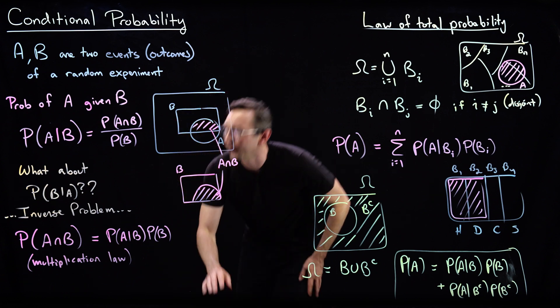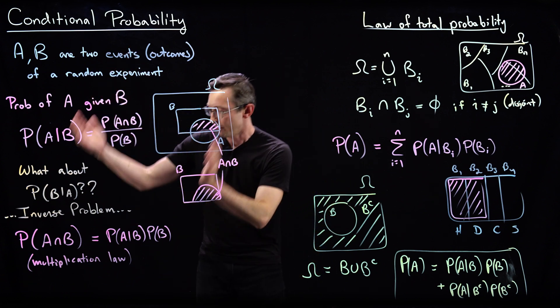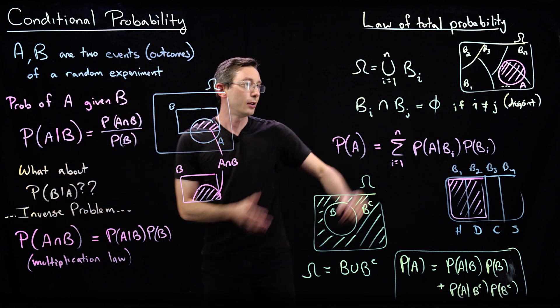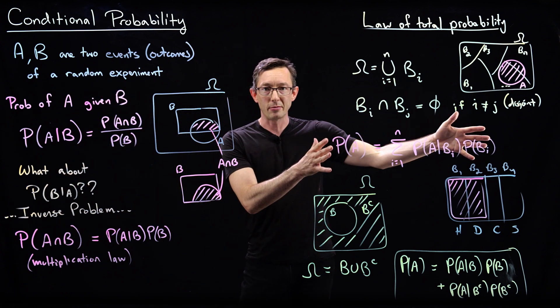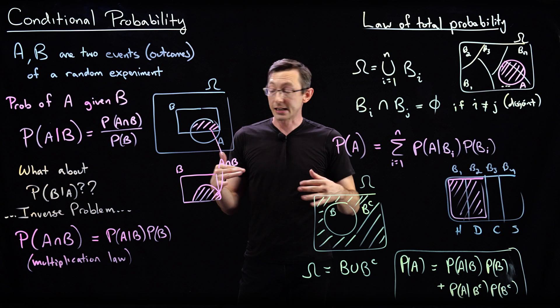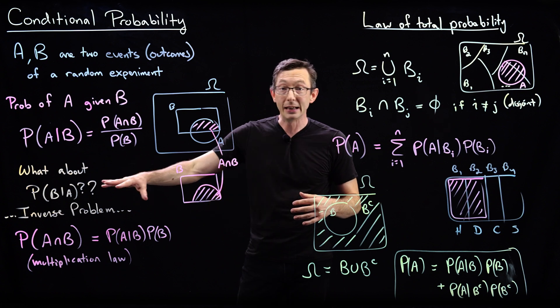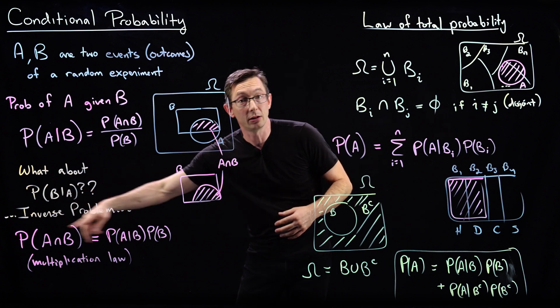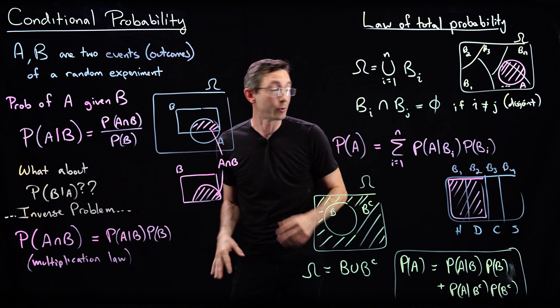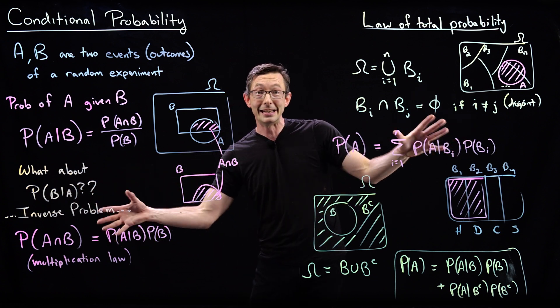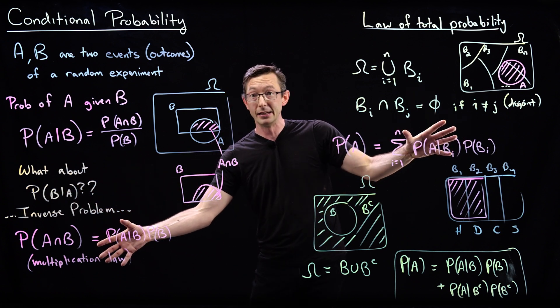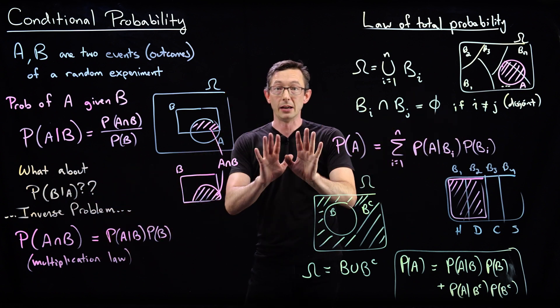Okay, that's enough. Multiplication law, law of total probability. Next, we're going to get into Bayes' theorem and how to solve these inverse problems — but we're going to need these ideas here. Thank you.